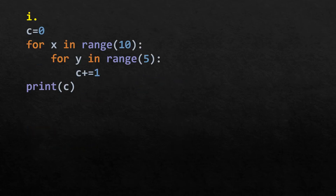Here c is initialized with 0. A nested for loop runs: for x in range(10), and within that for y in range(5), c is incremented by 1. The print statement is outside both loops, so it only prints the final value of c. For each of the 10 values of x, y ranges from 0 to 4 (5 iterations), so c = 50.